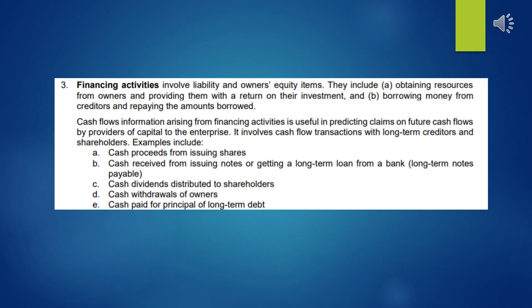For the last category: financing activities. This involves liability and owner's equity items — obtaining resources from owners and providing them with a return on their investment, borrowing money from creditors, and repaying the amounts borrowed. Cash flow information from financing activities is useful in predicting the claims of future cash flows by providers of capital. It involves cash flow transactions with long-term creditors and shareholders.